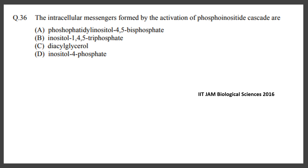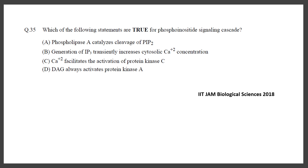An MSQ question asked about intracellular messengers formed by activation of the phosphoinositide cascade — options included PIP2, IP3, DAG, and inositol-4-phosphate. The correct answers are IP3 and DAG. A similar question in IIT JAM 2018 asked which statements are true for the phosphoinositide cascade. The correct answers were: IP3 transiently increases cytosolic calcium, and calcium facilitates the activation of protein kinase C. DAG activates protein kinase C, not protein kinase A.